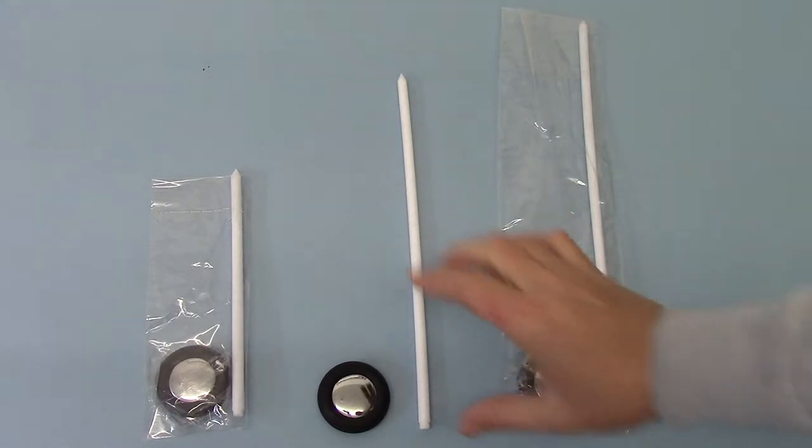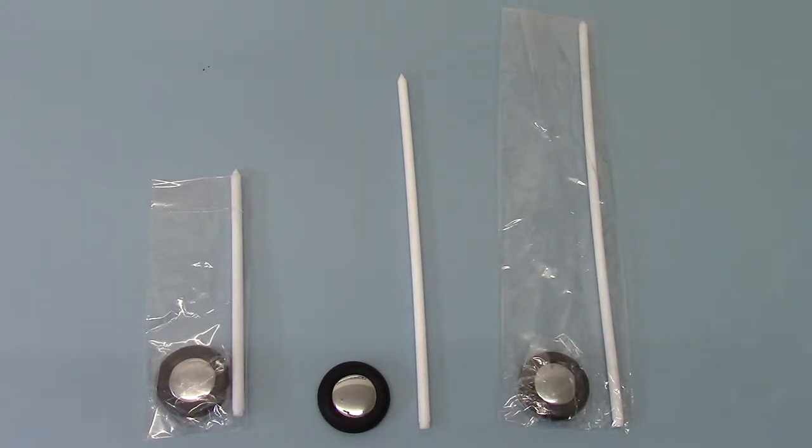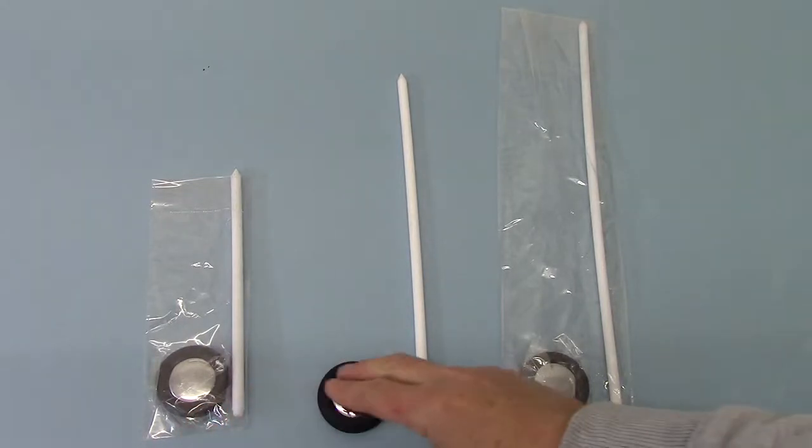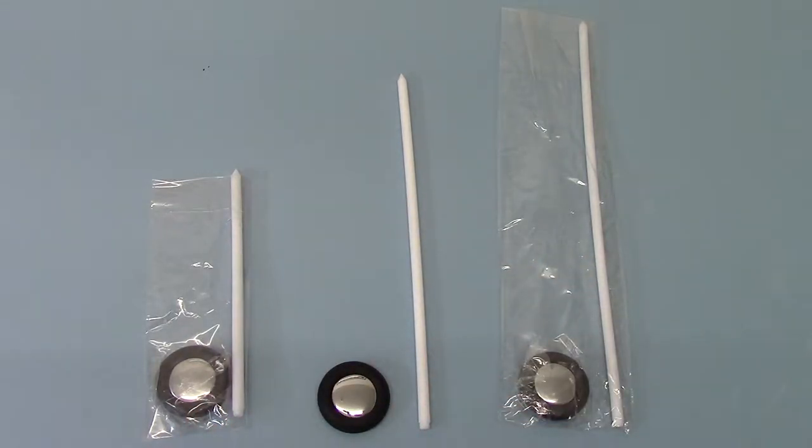Handle length does vary slightly, but it's approximately an old metric foot handle length. On the left you've got the shorter compact version, which is a 21 centimeter handle.